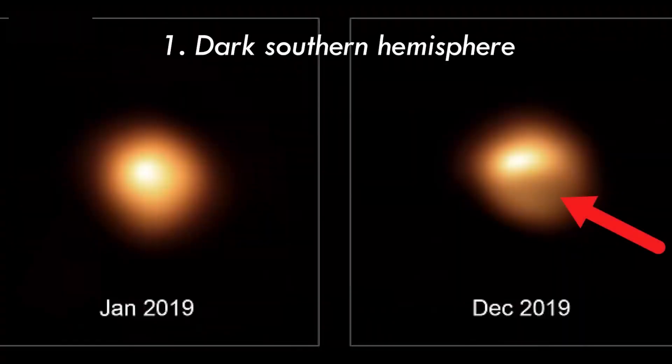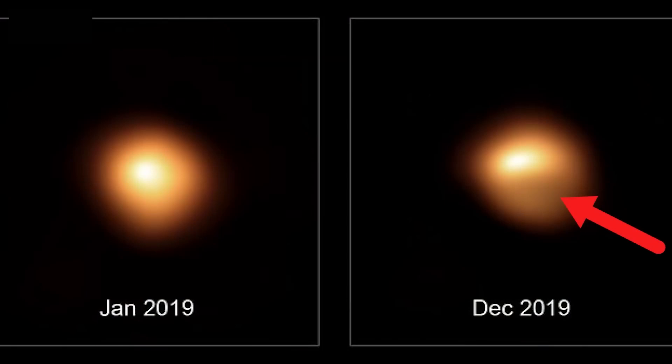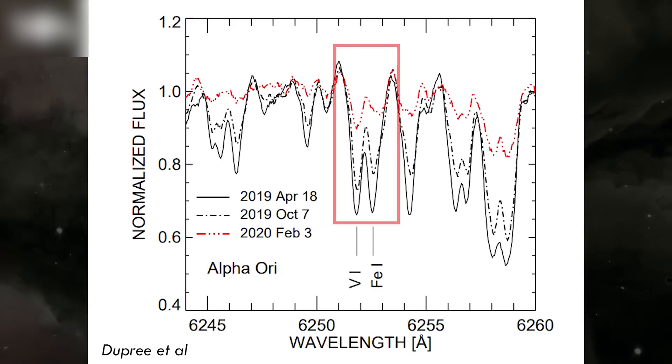This explains why, by mid-February 2020, Betelgeuse had lost around three times as much brightness, from magnitude 0.5 to magnitude 1.7 after it began to fall sharply in October 2019.